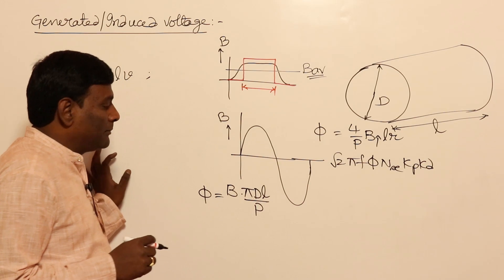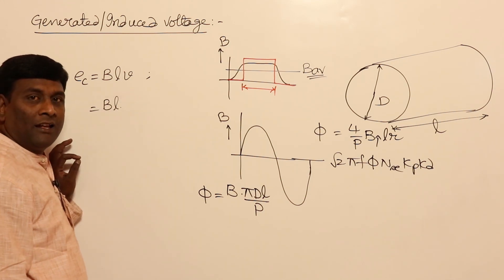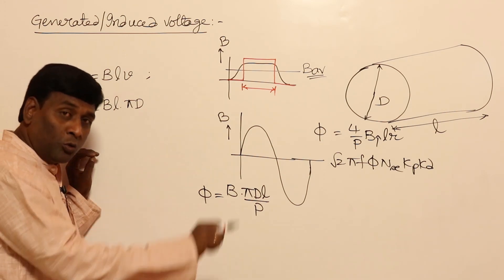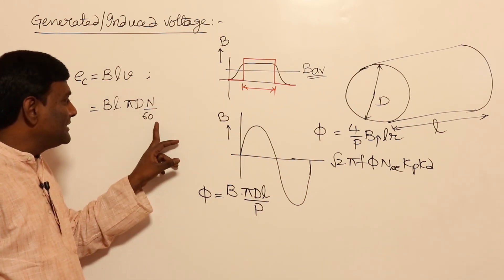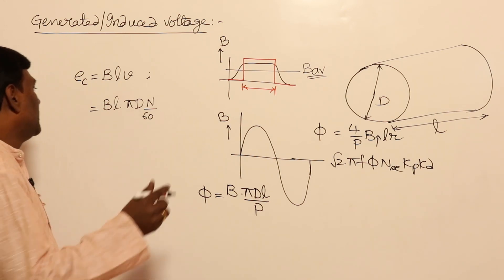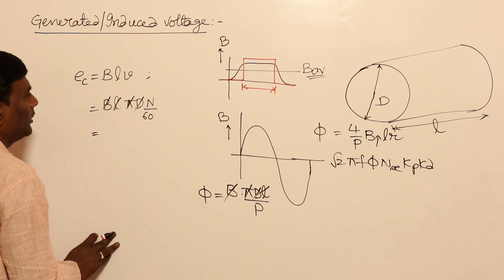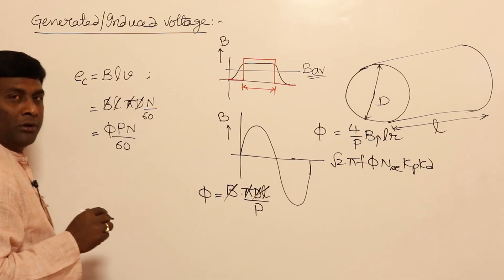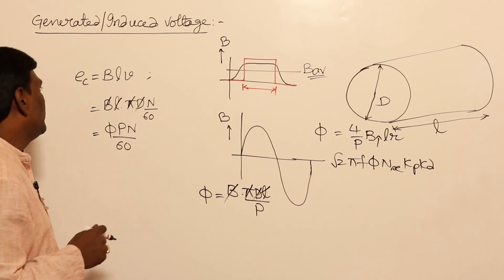What is induced voltage in a conductor? B into length into velocity — and in one revolution, how much will be the velocity? πD. πD is going to be the velocity because you are rotating the rotor. So velocity = πD * N/60. N is revolutions per minute; dividing by 60 gives revolutions per second. So substituting B, L, and v = πD*N/60, and replacing πDL/P with φ, this gives induced voltage per conductor = φPN/60.